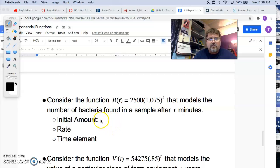The question is right here, what is the initial amount? In other words, how many bacteria did I start with? And that number is living right here in the front. So we started with 2,500, right?